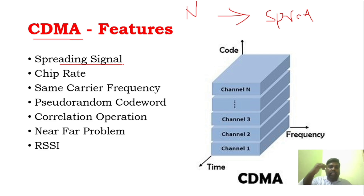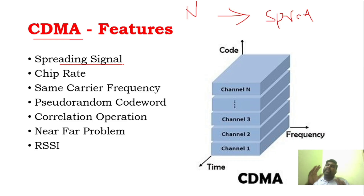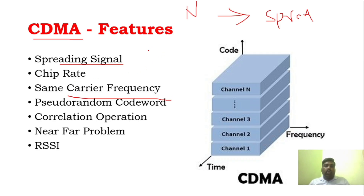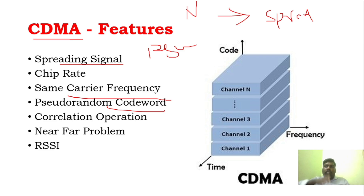The chip rate will be higher than the message rate. All users will have the same carrier frequency. We are using a pseudo-random code, and the codes will be orthogonal between users. One user uses one code, another user uses a completely different code, so the chances of getting interference are very very minimum. There is no overlapping or interference because we are using pseudo-random codes and their orthogonality function.